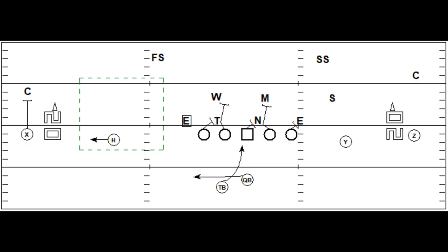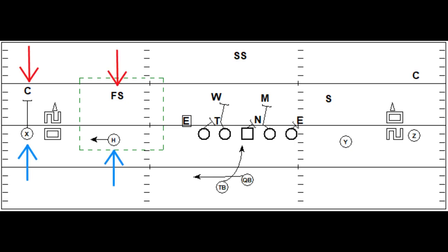The diagrams aren't to scale, but just imagine that anyone outside the dotted lines is too far away to be involved or count as a number in the screen game. However, if you have the same number of guys as the defence, or fewer, then you're at a disadvantage because you're outnumbered.